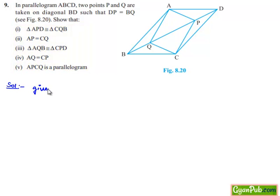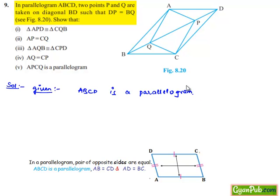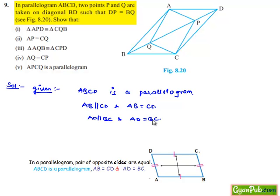Let us note the given information: ABCD is a parallelogram. The properties of the parallelogram are: AB is parallel to CD and AB is equal to CD; AD is parallel to BC and AD is also equal to BC.